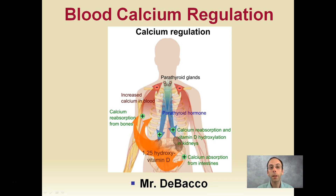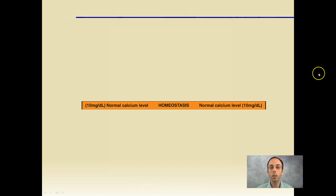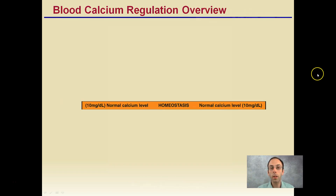Here we're going to look at how your body goes about regulating blood calcium levels. Let's start with homeostasis — what does your body want to maintain? Normal calcium levels are 10 milligrams per deciliter. Your body is trying to keep calcium at a very consistent rate despite a lot of changes.